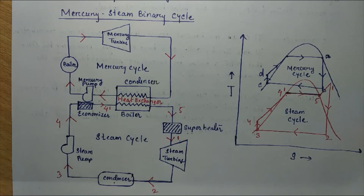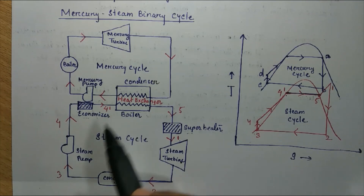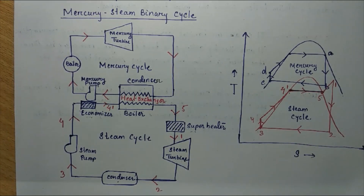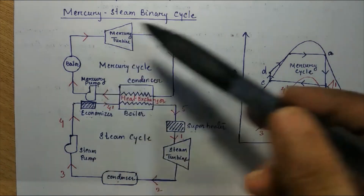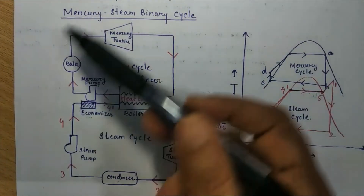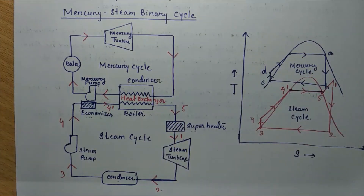Heat is rejected from the steam, converting the steam to water. That water is fed back to the economizer and then to the boiler by means of the steam pump. For the steam pump and steam turbine, the process considered is reversible adiabatic. This T-S diagram of the mercury-steam binary cycle is straightforward if you understand the Rankine cycle — here we just consider two Rankine cycles simultaneously with two different working fluids.